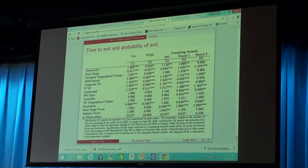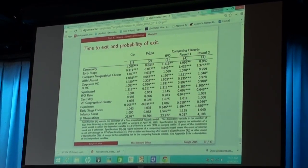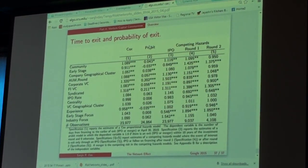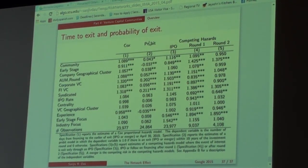The top variable there is community, and we try to see if you have more community VCs funding a startup, will it go to exit faster, will it have better multiples, a better return, and so on. So, there are various different things. The stars against them means that variable is significant, explaining better performance of the startup. So, the community variable is highly significant. The centrality variable, which is sort of halfway down the list, in previous research was actually highly significant. That is, if you had a star VC funding a startup, your startup would likely be better than a startup that didn't have a star VC. But after you account for the community effect, that variable goes away.